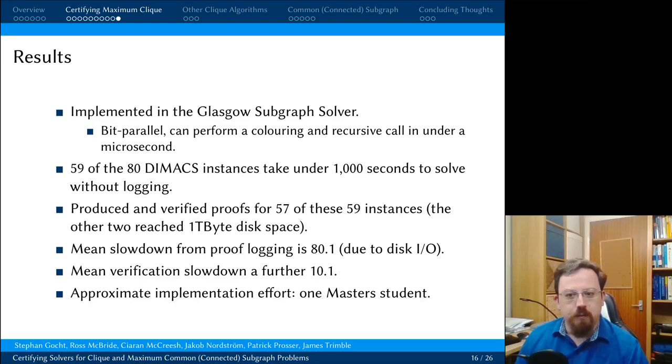The mean slowdown from proof logging was a factor of 80. This is almost entirely due to disk I/O. Remember we're doing a recursive call in under a microsecond. Each recursive call requires maybe a kilobyte of proof logging. And I was working with spinning rust disks here, which are not the fastest. And verification was a further factor of 10 on top of that. And just to give you an idea of implementation effort. If you have one good master's student who has never implemented a clique algorithm before and has never implemented proof logging before, then they should be able to produce you a proof logging maximum clique implementation as a master's dissertation.